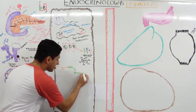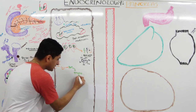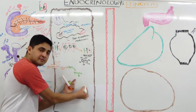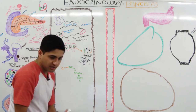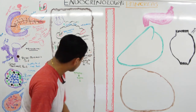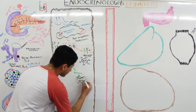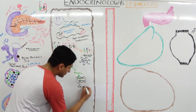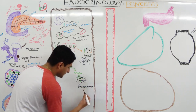Glucose-6-phosphate enters glycolysis, producing pyruvate, which then goes to the Krebs cycle and then oxidative phosphorylation in the mitochondria. Through the electron transport chain, ATP is produced. The ratio of ATP to ADP goes up.